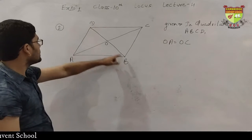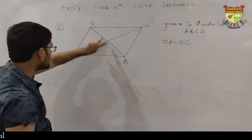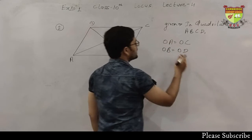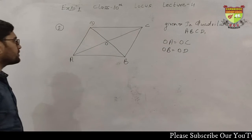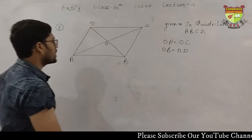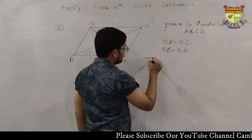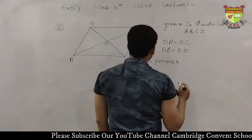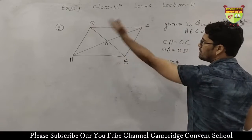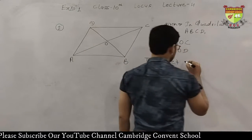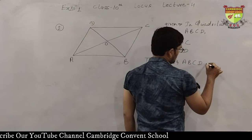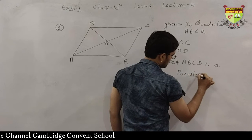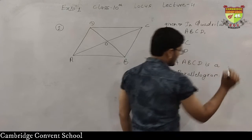Another diagonal is BD, in which OB is equal to OD. These two conditions are given to us. Now, what are we supposed to prove? To prove: ABCD is a parallelogram.